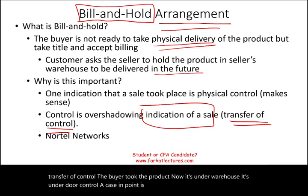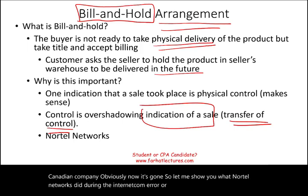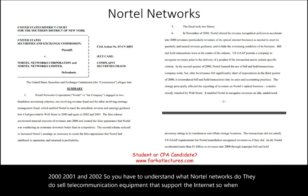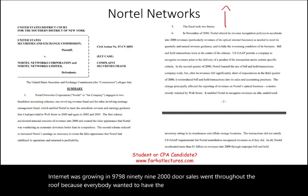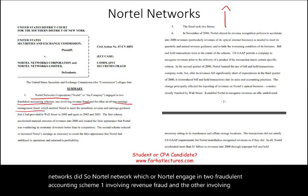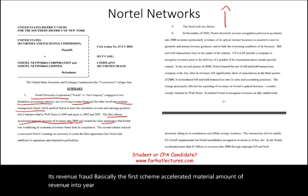A case in point is Nortel Networks, a Canadian company that is now gone. During the internet boom of 2000, 2001, and 2002, Nortel sold telecommunication equipment supporting the internet. They engaged in two fraudulent accounting schemes — one involving revenue fraud and the other involving earnings management fraud, which is basically the same thing. The first scheme accelerated a material amount of revenue into year 2000 and created a false appearance that Nortel was weathering an economic downturn better than its competitors.